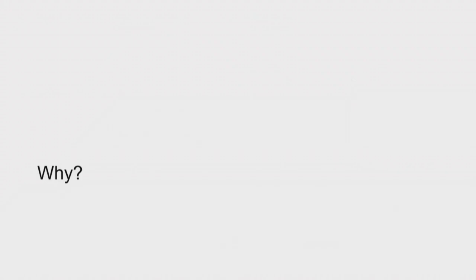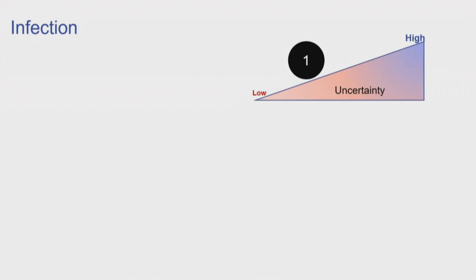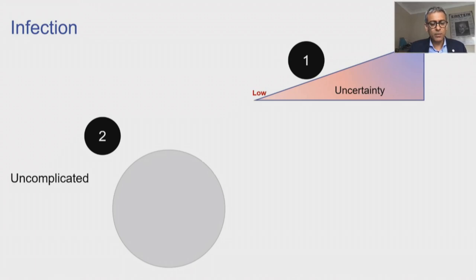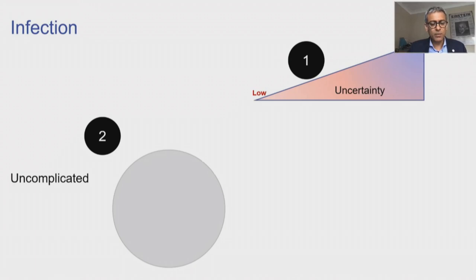When I got asked to do this talk, I was wondering how to frame it — why are we doing this? The first thing that came to me is we are talking about infection, and how certain are we about infection in the context of sepsis definition. That uncertainty is variable between cases, within healthcare systems, and between healthcare systems. Most of the infections that we see are uncomplicated infections, and only a proportion of these go on to develop sepsis.